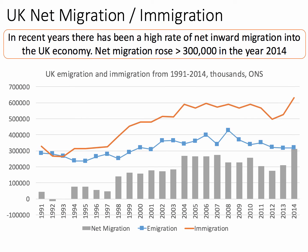Clearly, net migration has become one of the dominant economic and political issues of recent times. Net migration rose above 300,000 in 2014. Crucially, gross immigration in 2014 was over 600,000, but people also leave — migrants returning to their country of origin or UK people deciding to live and work overseas. So the key figure is net migration, and it has been strongly positive particularly in the last 10 years.